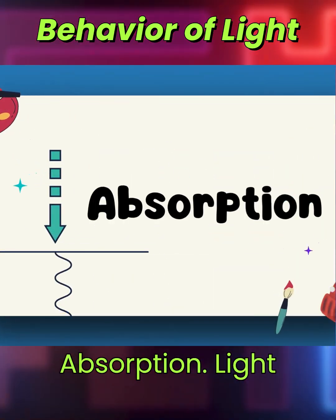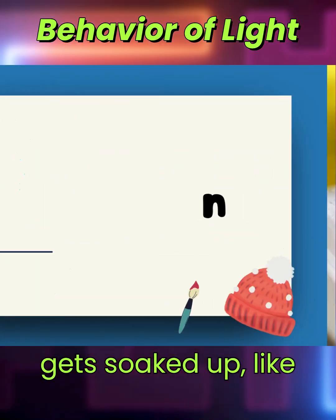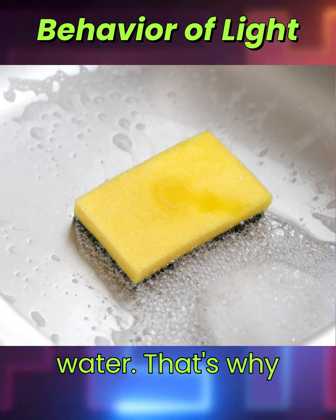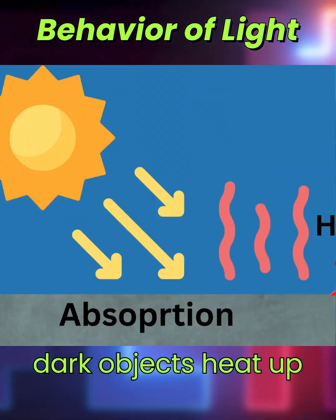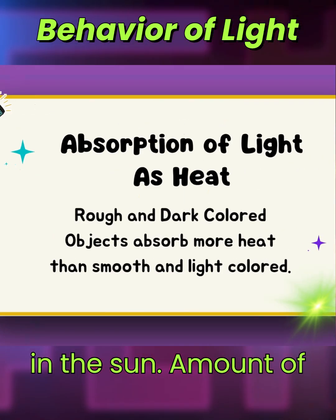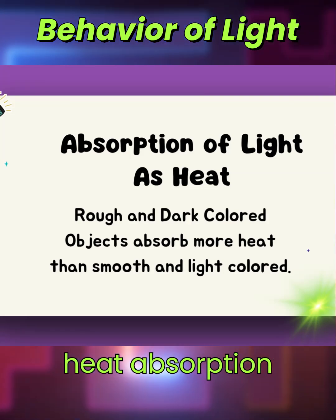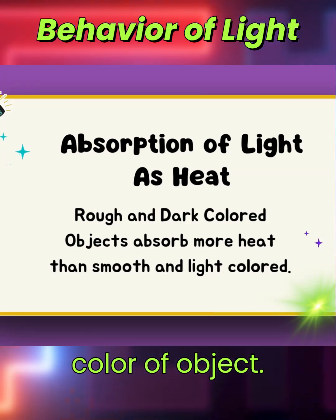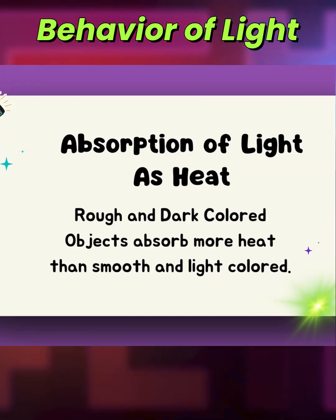Absorption — light gets soaked up, like a sponge soaking water. That's why dark objects heat up in the sun. The amount of heat absorption depends on the type and color of the object.